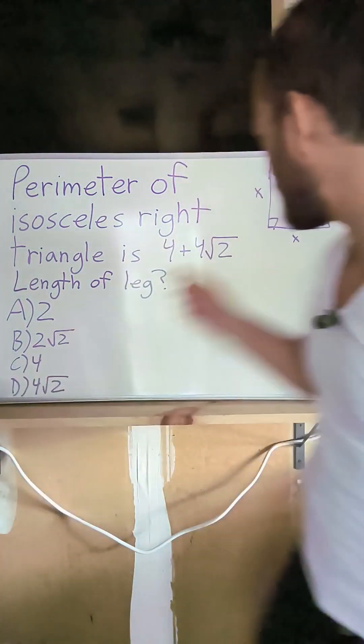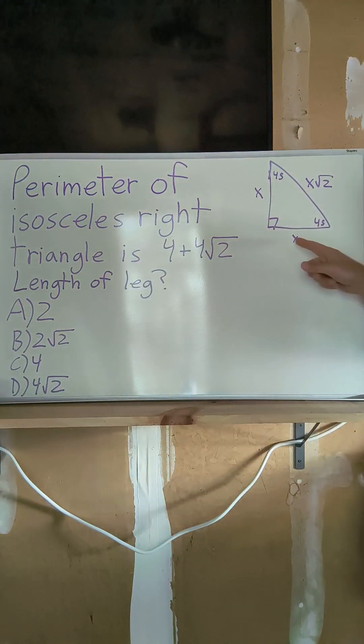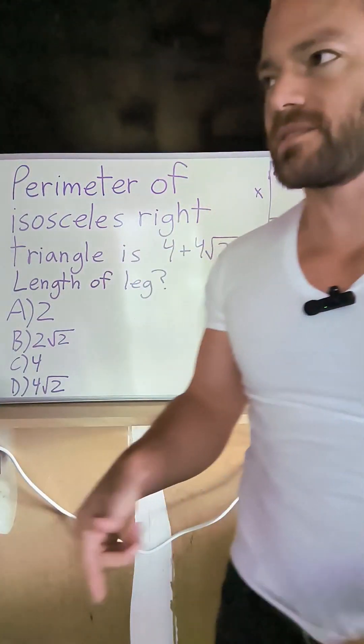And you know what the legs are, right? The legs are like the sides of a right triangle that aren't the hypotenuse, the other two sides.